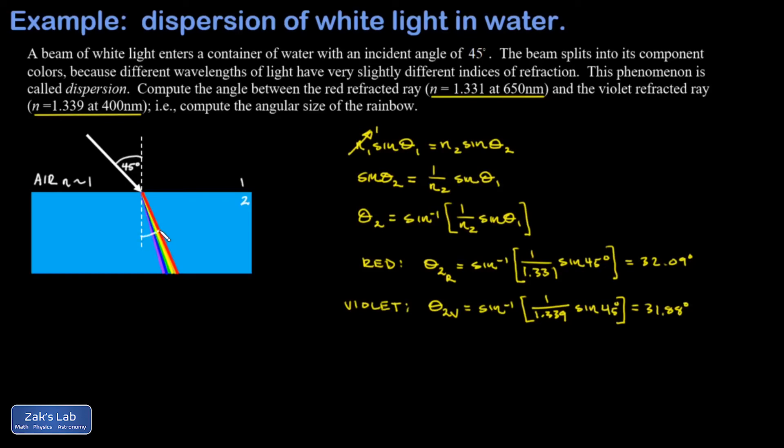measured with respect to the normal so that's what we're talking about. There's the angle to the red, I can see that's bigger than the angle to the violet, and that actually means the violet has been refracted more strongly than the red